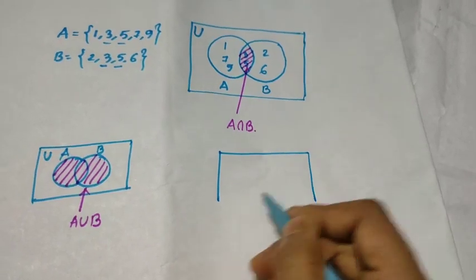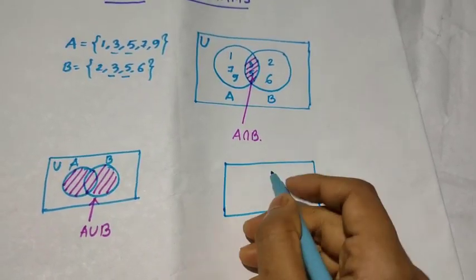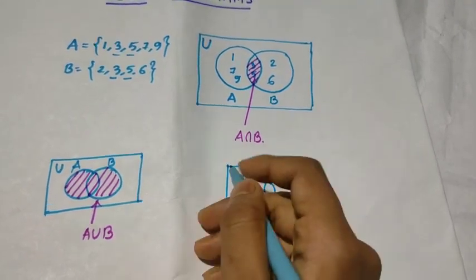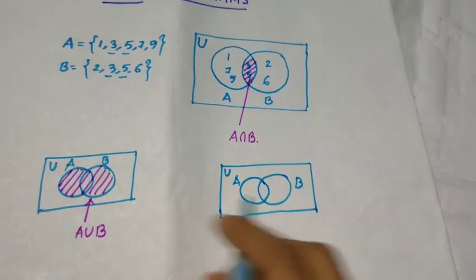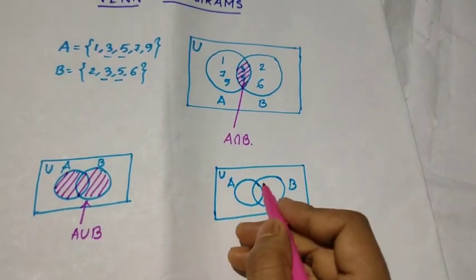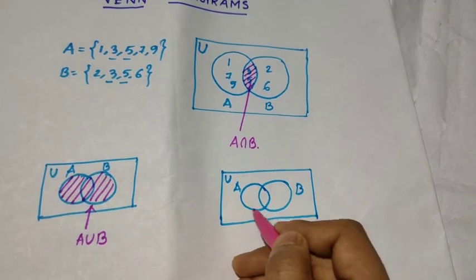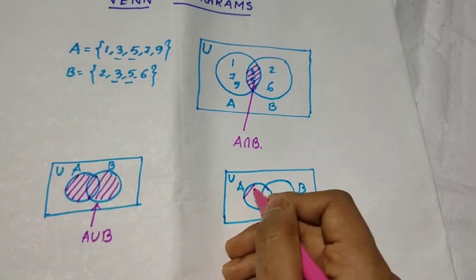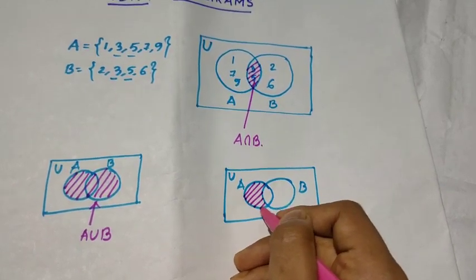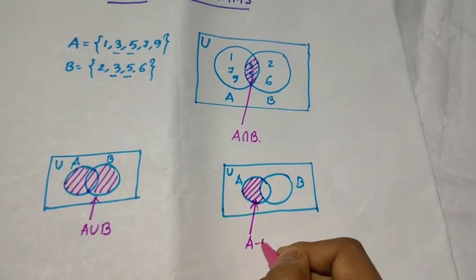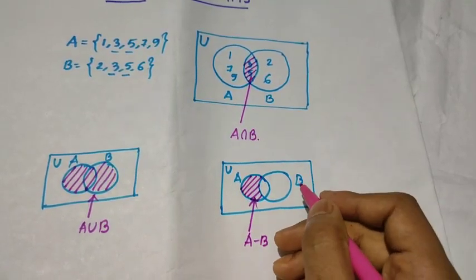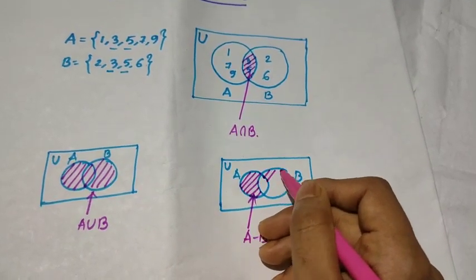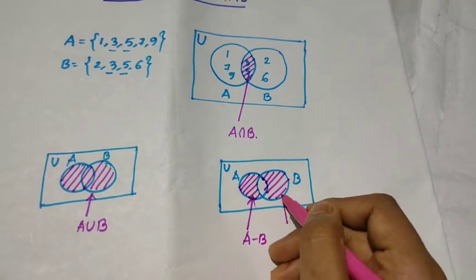Now if we are asked to find A minus B, how do we find this? This is A and this is B, inside the universal set. If we are asked to find A minus B, we take all of A and remove the overlapping portion with B, and then we will get A minus B. Similarly, if we are asked to find B minus A, this whole is B, and if we subtract the overlapping region, we will get B minus A.